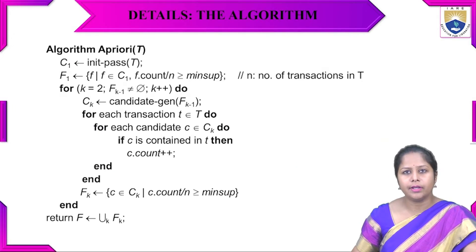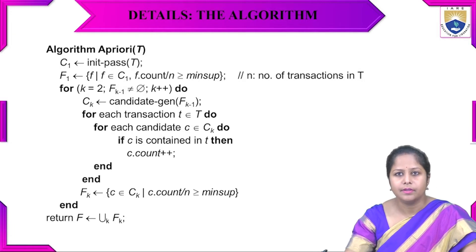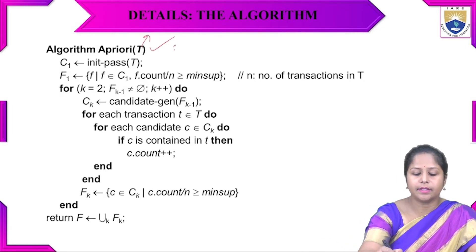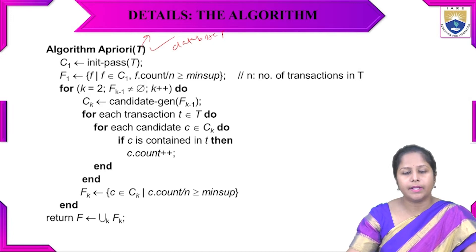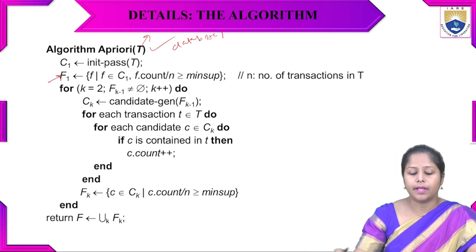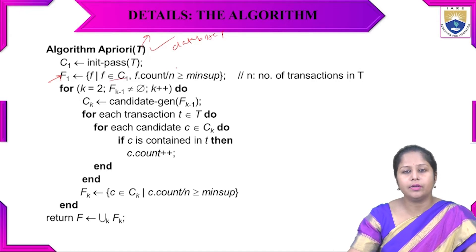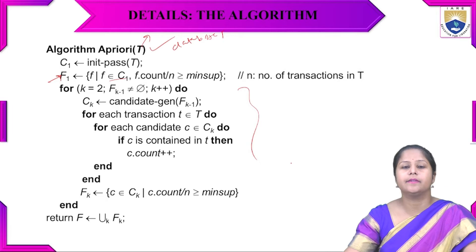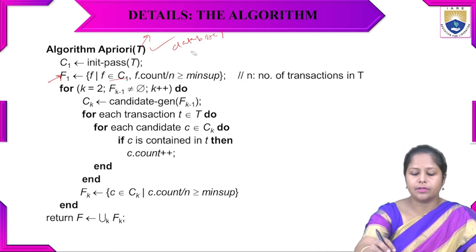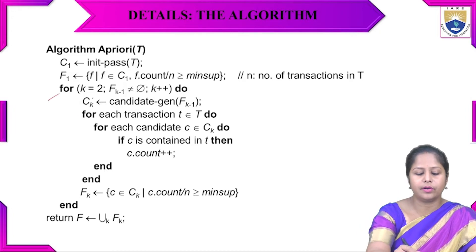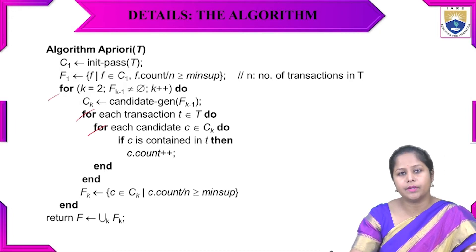The detailed Apriori algorithm is written as follows: for database T, C1 is generated in the initial pass over T. The frequent item set F1 is the set of items in C1 where the count divided by n is greater than or equal to the minimum support. For each transaction, a candidate generation function is called. Three for-loops handle the repetition of these steps across iterations.